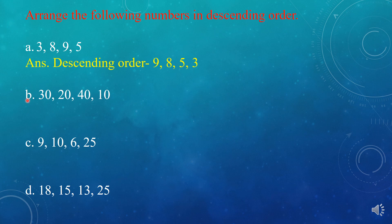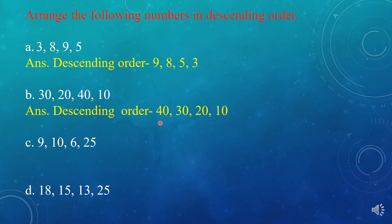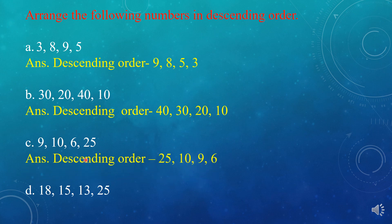The next one, B: 30, 20, 40, 10. In descending order, the biggest is 40, then 30, then 20, and at last 10. Next, C: 9, 10, 6, 25. Which is the biggest number here? 25. So we write 25 first, then 10, then 9, and the last one is 6.